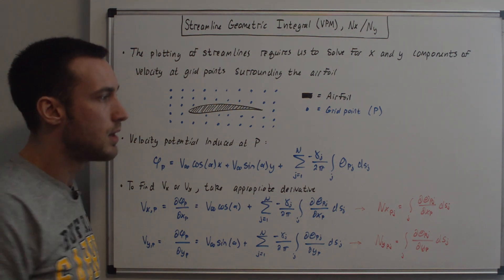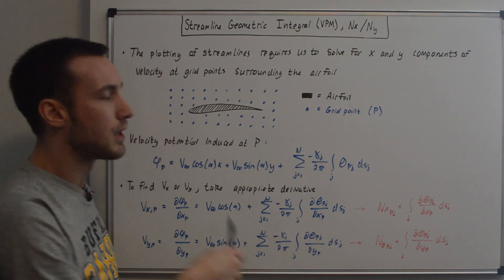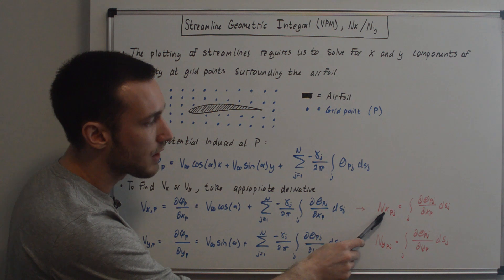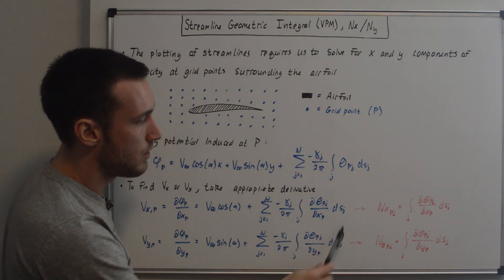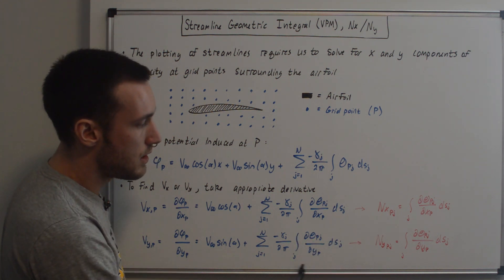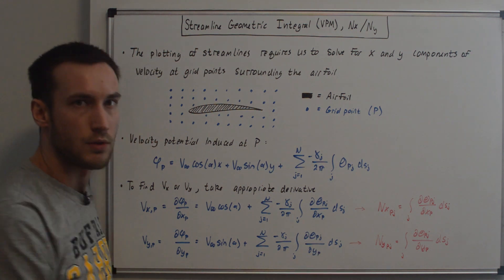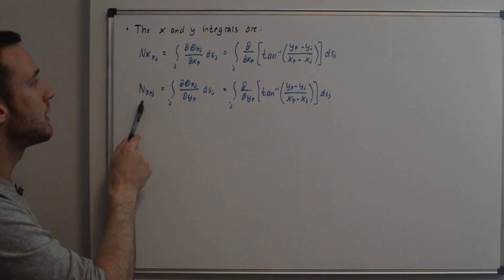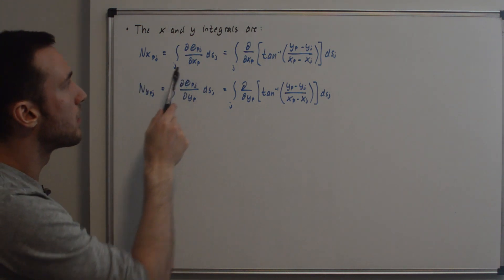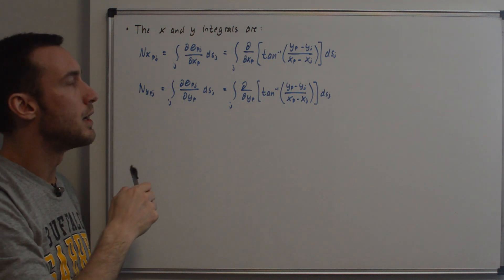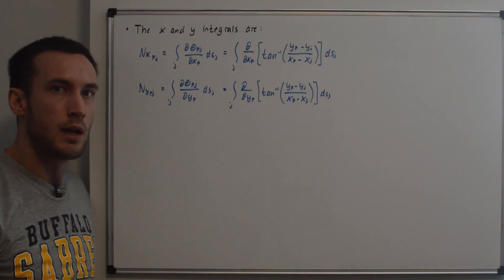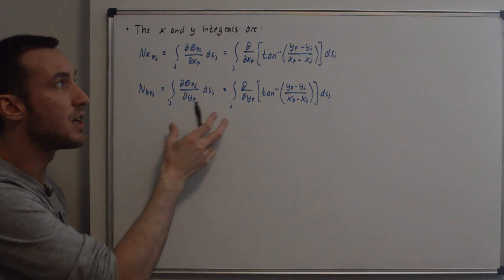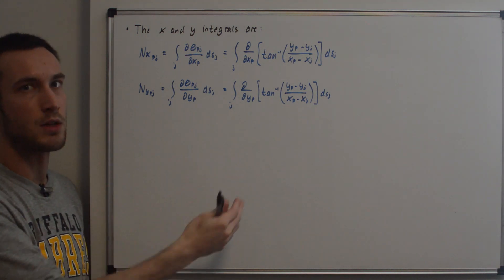The focus of this video is to compute this geometric integral. We define N_x(Pj) and N_y(Pj) as these integrals — that's the focus here. We can plug in for theta, which I derived in my K_ij derivation video. It's the angle between point P and the jth panel, expressed as the inverse tangent of (y_P minus y_j) over (x_P minus x_j).